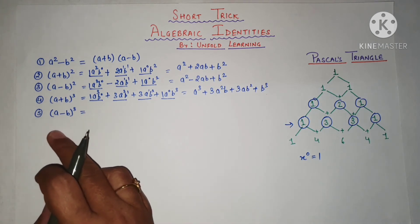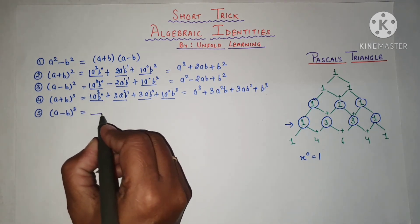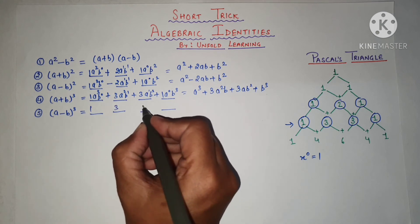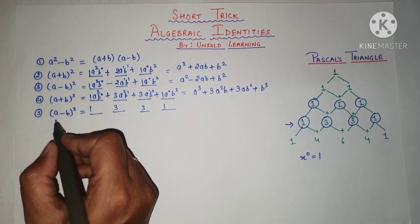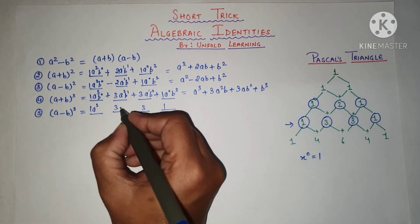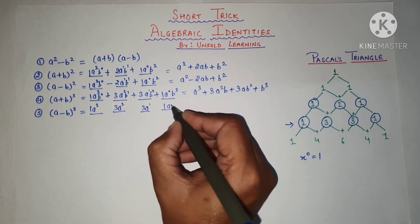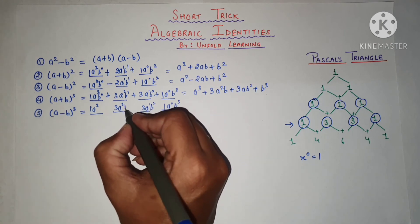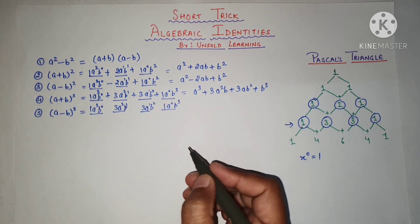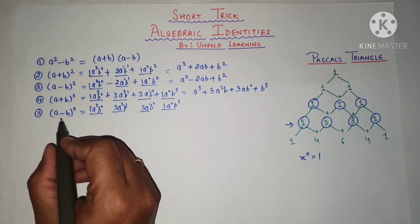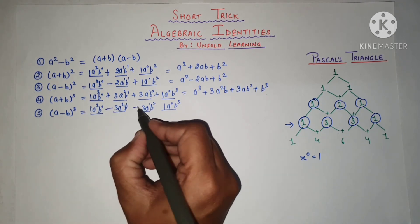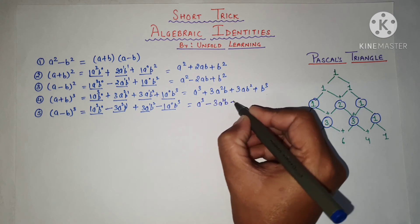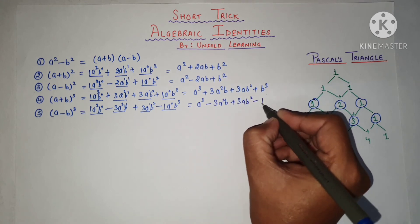Now we will write for (a − b) whole cube. The powers for A and B are the same as before: A cubed, A squared, A to power 1, A to power 0 and B cubed, B squared, B to power 1, B to power 0. About the sign: the first is positive, then negative, alternating. So the formula becomes A cubed minus 3A squared B plus 3AB squared minus B cubed.